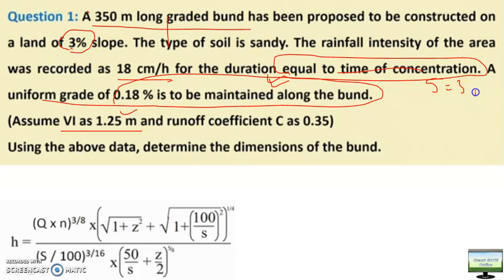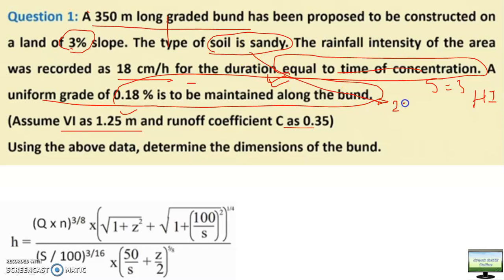Vertical interval is given, land slope is given, so from there you can calculate the horizontal interval. Runoff coefficient is also given. The type of soil is sandy soil — from sandy soil you know the side slope is 2:1 and the seepage line slope is 5:1. From seepage line slope and side slope you can calculate the base width, but for this you need to know the height of impounding water.